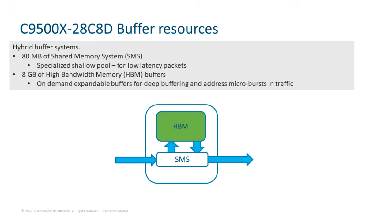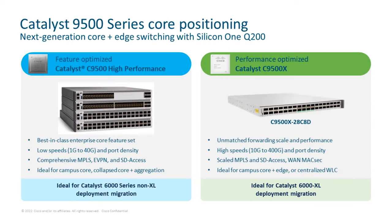On the buffering side, we have a hybrid buffering model utilizing two unique buffers for different types of traffic. For high-priority traffic and traffic requiring low latencies, we use 80 MB specialized shared memory subsystem buffers. To address micro-bursts and buffering requirements for speed discrepancies between ingress and egress, we have 8 gigabytes of on-demand high-bandwidth memory buffers.